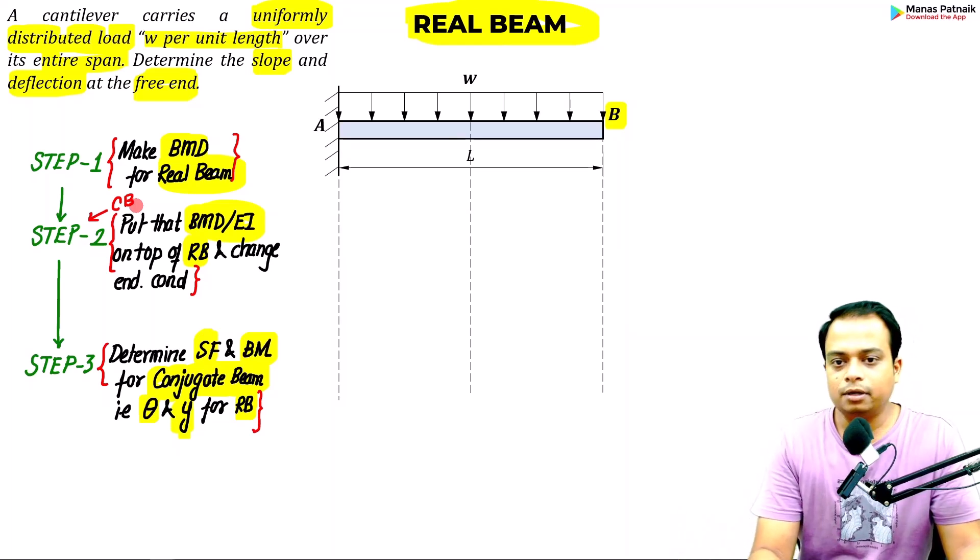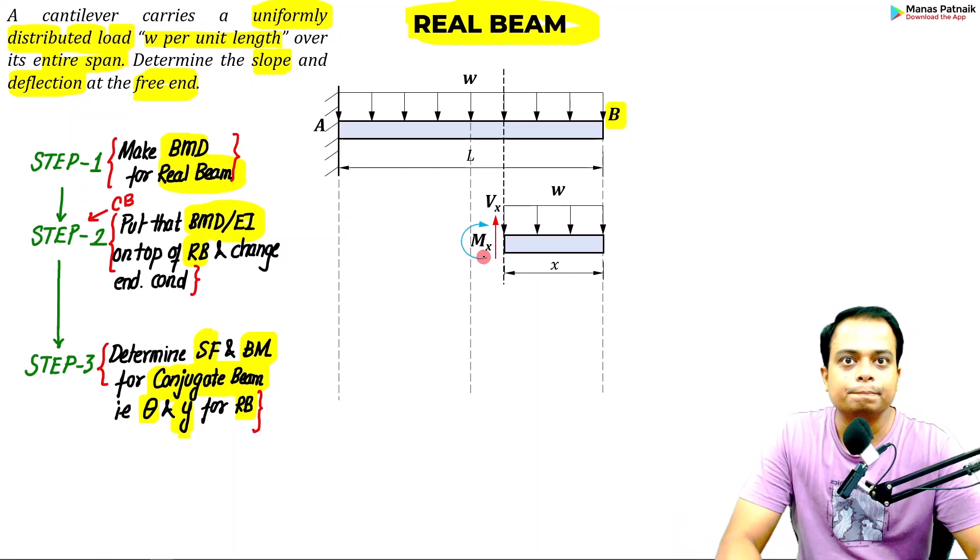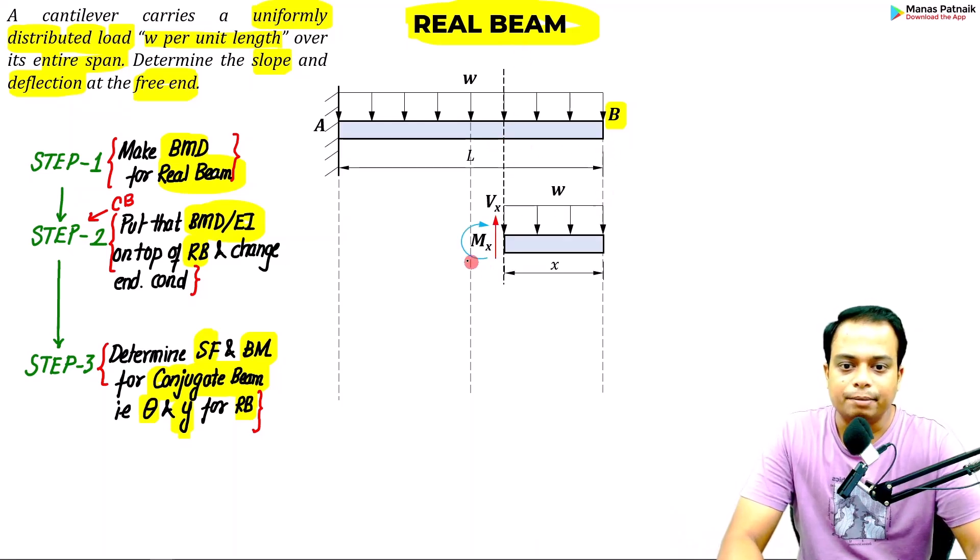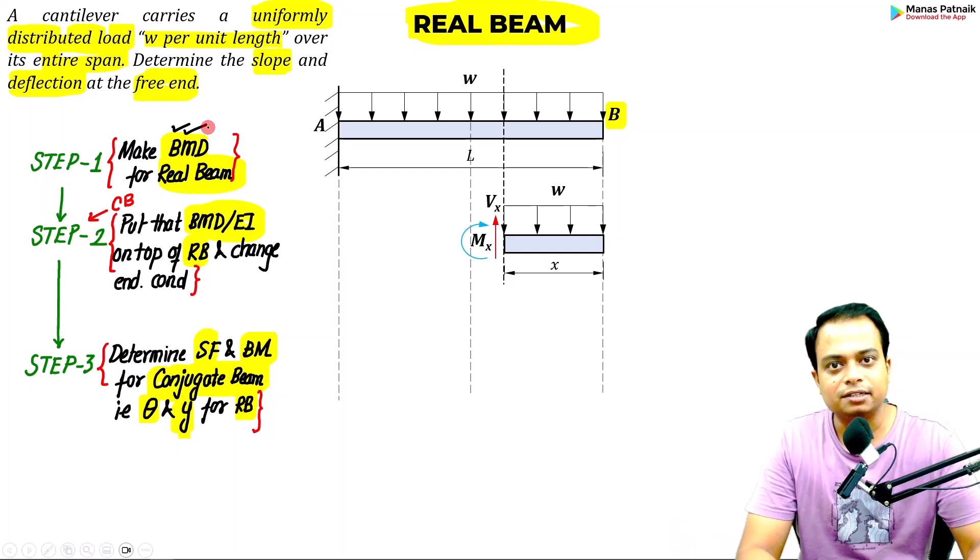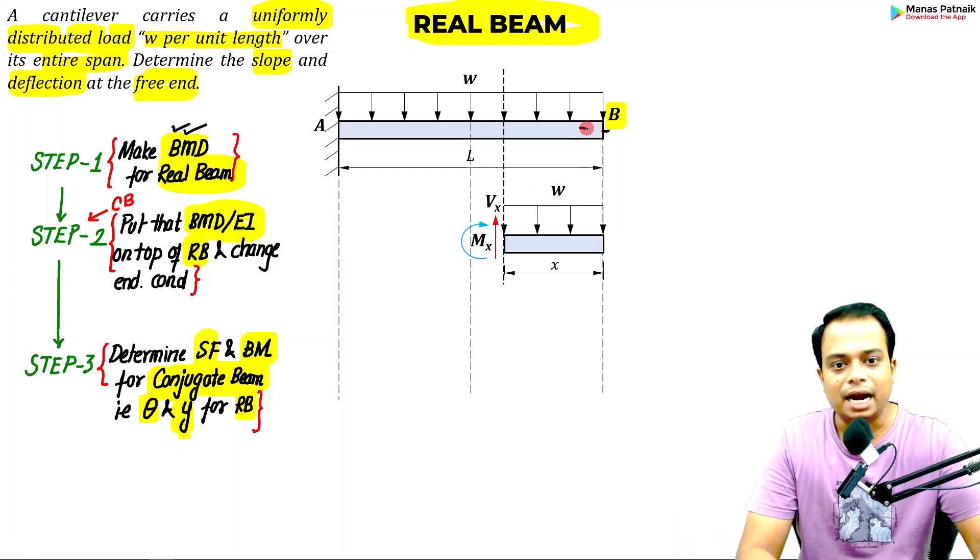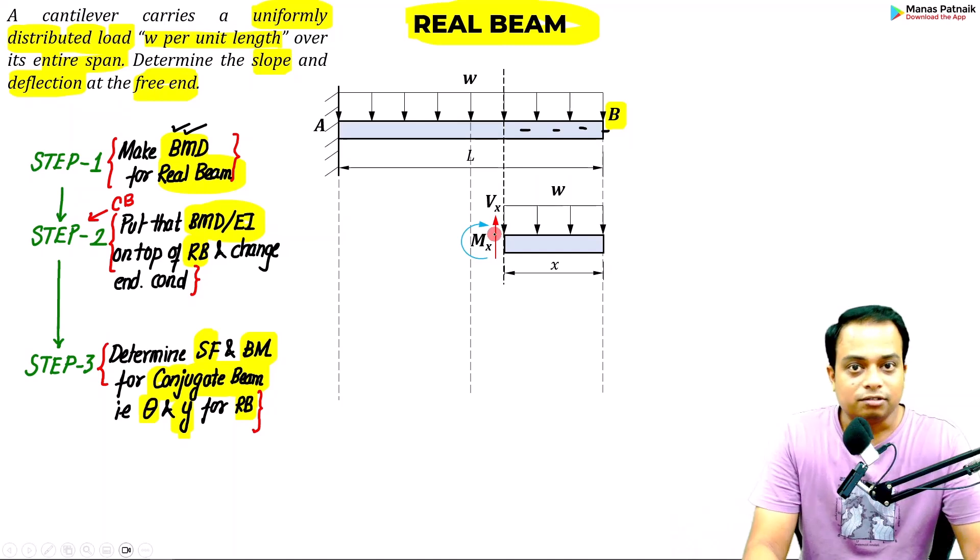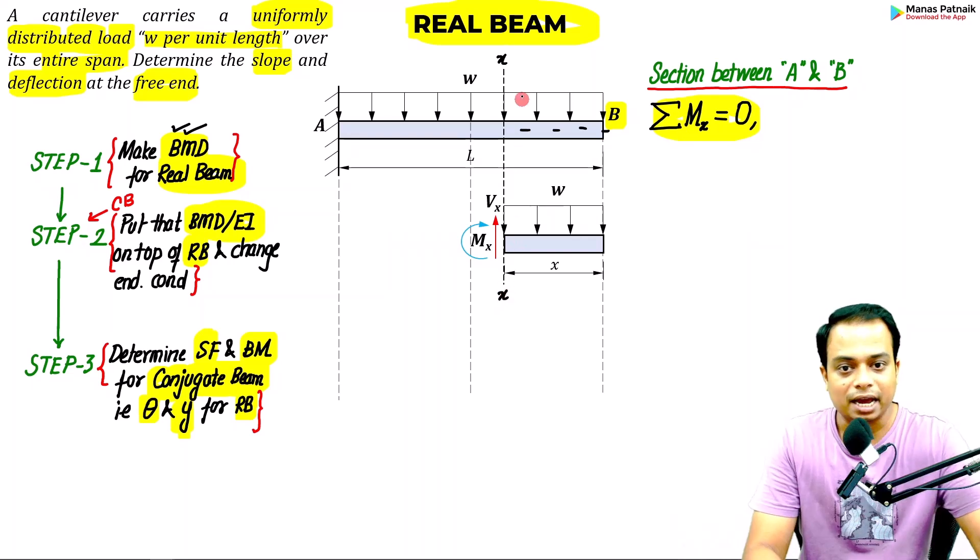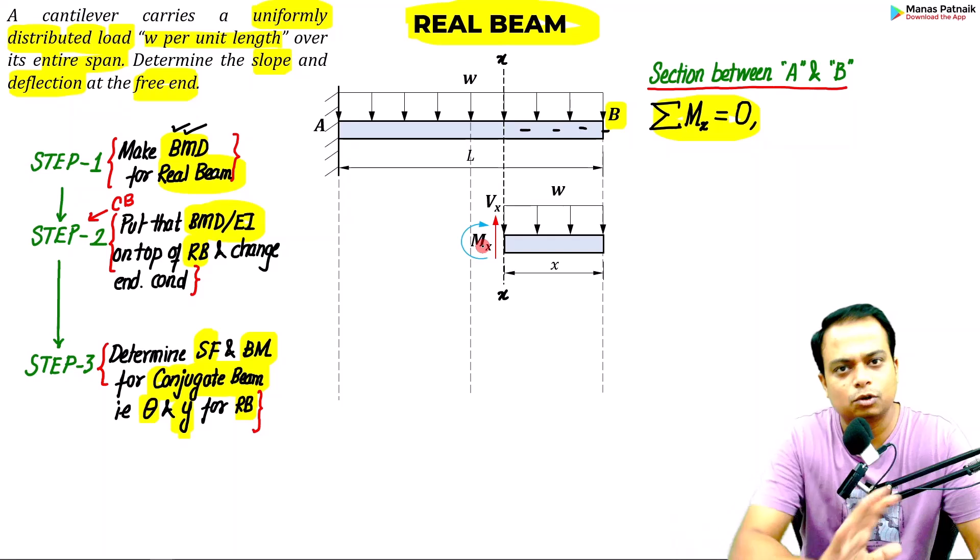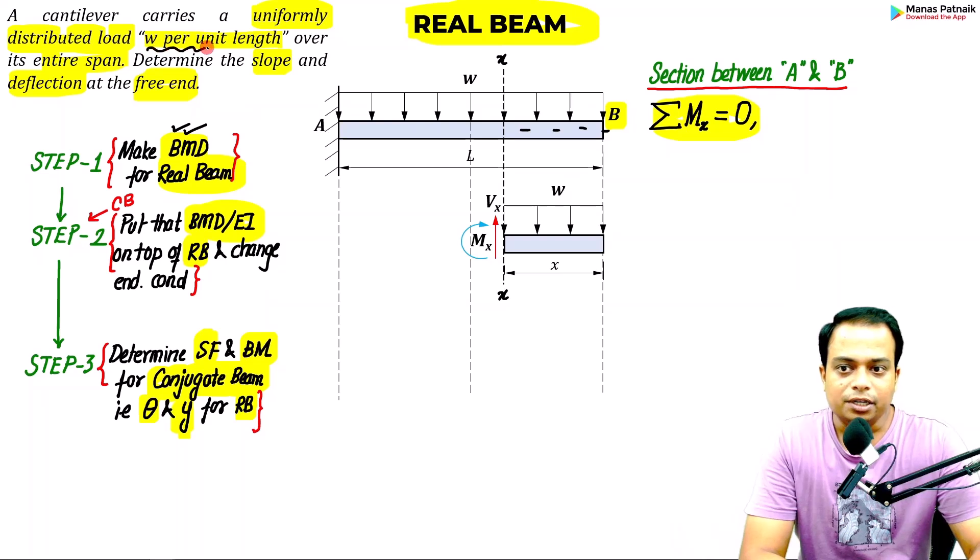First thing is you need to take some section. I have taken this much chunk, taking the section from the right. Bending moment clockwise, shear force upwards. We are interested in making the bending moment diagram, that is the M values at each and every point along the length of the beam. Since the beam is in equilibrium, summation of all the forces will be zero as well as moment will be zero about this section, the X-X section.